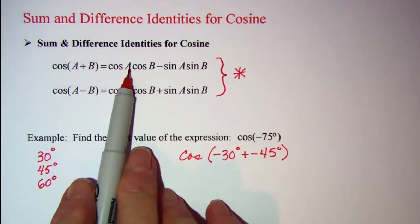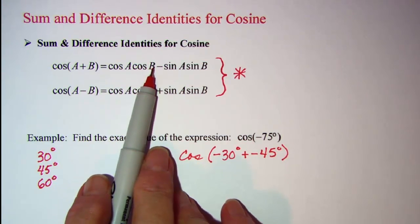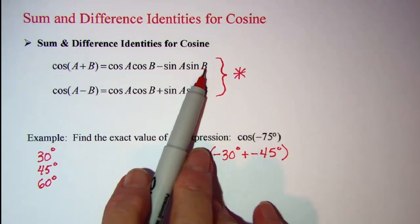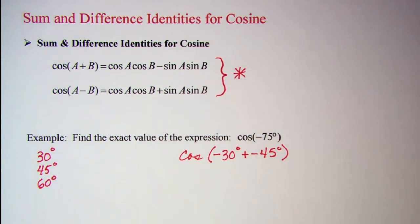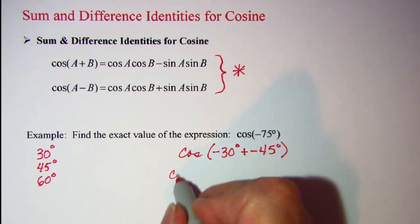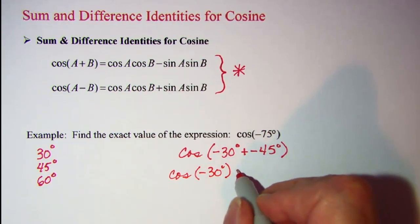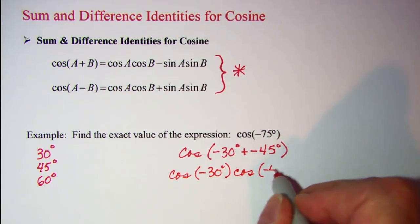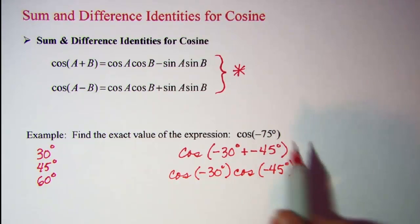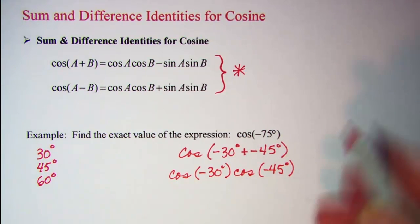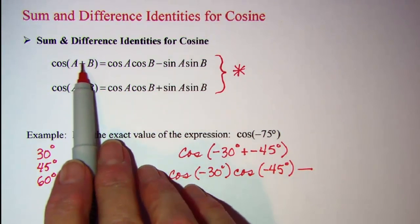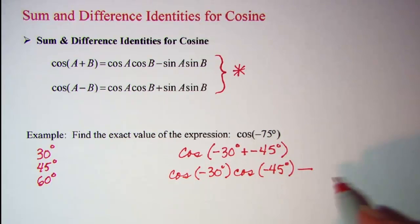we'll take the cosine of A times the cosine of B, subtract the sine of A times the sine of B. So this problem then becomes the cosine of negative 30 times the cosine of negative 45. And since this is a plus right here, I need a minus. Because notice these are opposites, this is plus and this one is minus. So subtract the sine of negative 30 times the sine of negative 45.